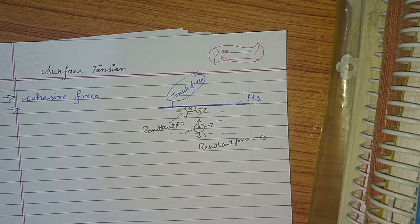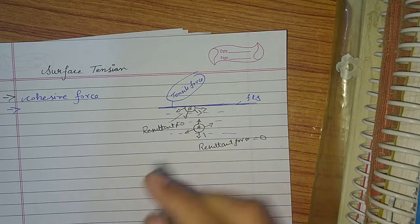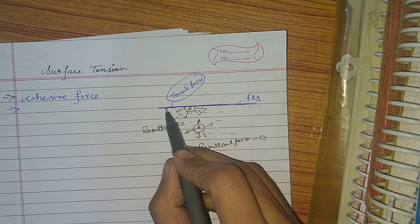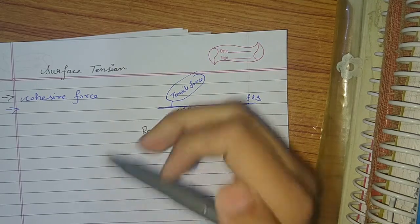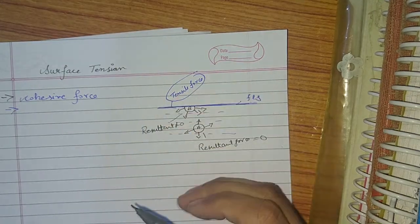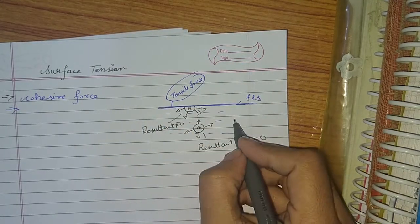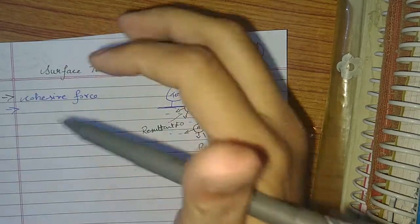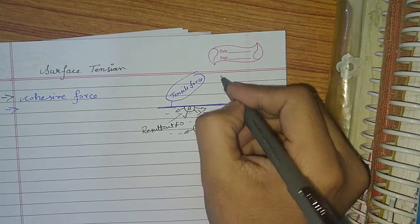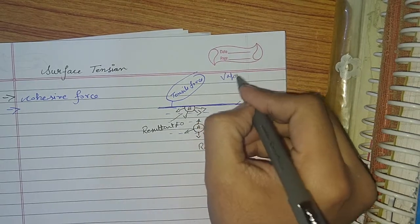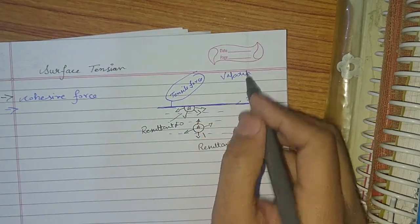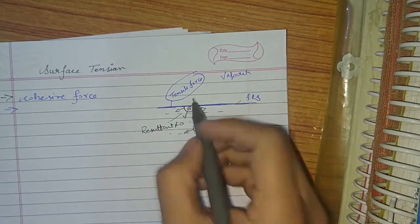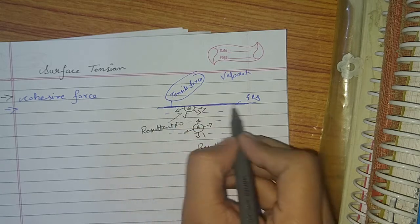Today we will start surface tension. Suppose this is a free liquid surface, below which there is a liquid and above which there is a vapor. It is a vapor-liquid interface.